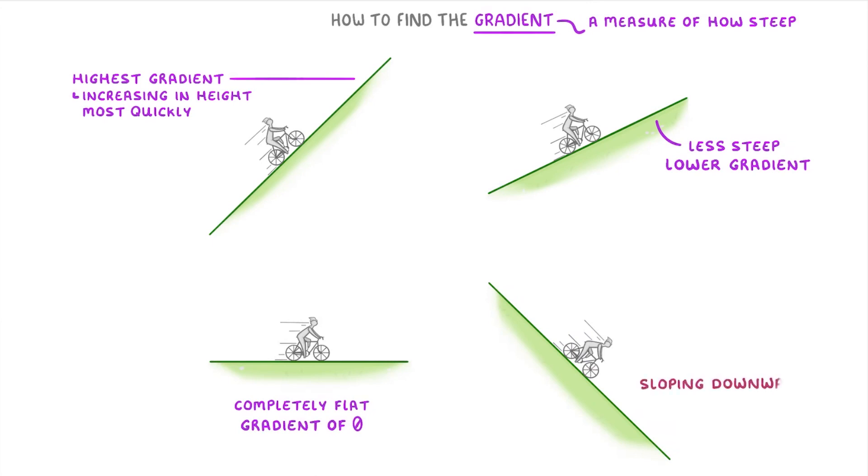And this last one is sloping downwards so we say it has a negative gradient. And if it was sloping downwards even more steeply then its gradient would be even more negative.